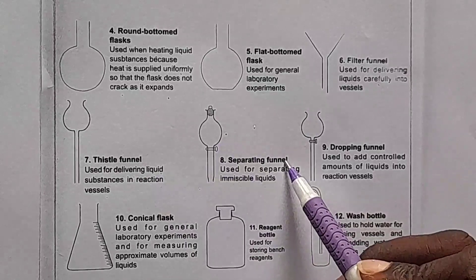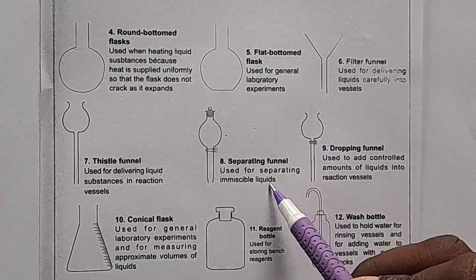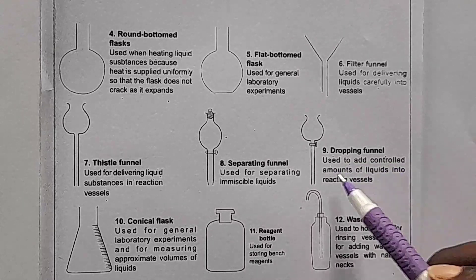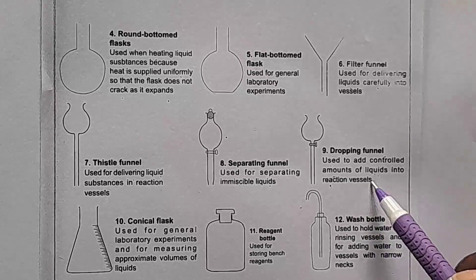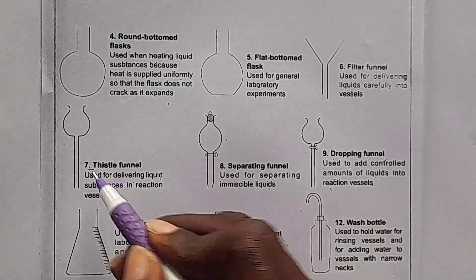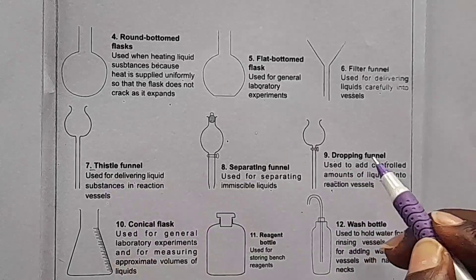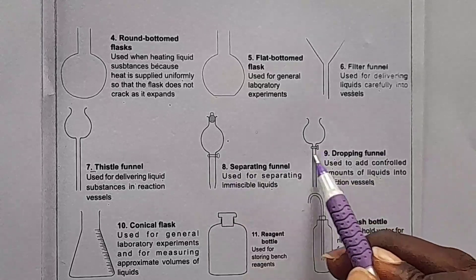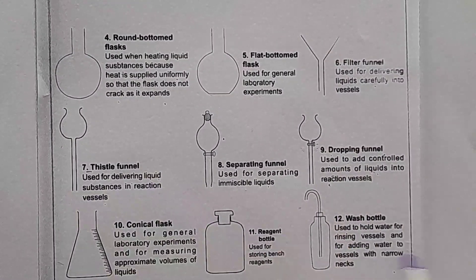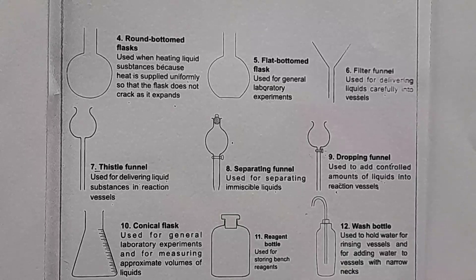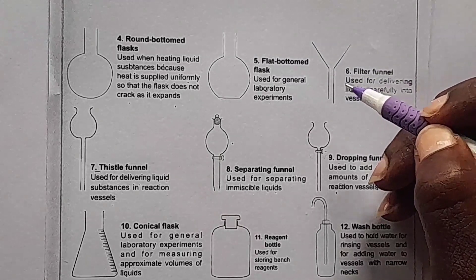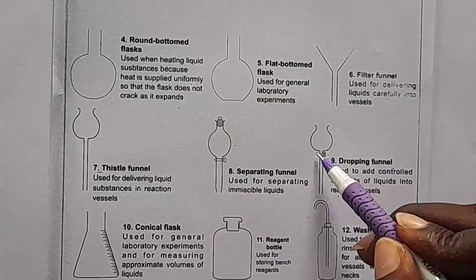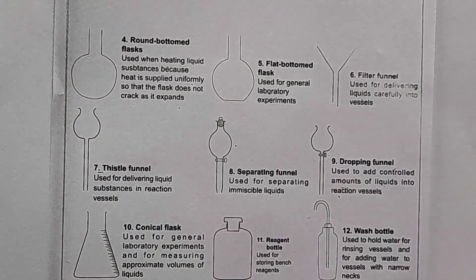Here we have a separating funnel. It's used for separating immiscible liquids. Then, number nine, we have a dropping funnel. A dropping funnel is used to add a controlled amount of liquids into reaction vessels. These two — number seven and number nine, the thistle funnel and dropping funnel — look alike. The main difference is: a dropping funnel has a tap, while a thistle funnel has no tap. During the exam, you can be asked to state one physical difference between a dropping funnel and a thistle funnel. The answer is: a dropping funnel has a tap, while a thistle funnel has no tap.